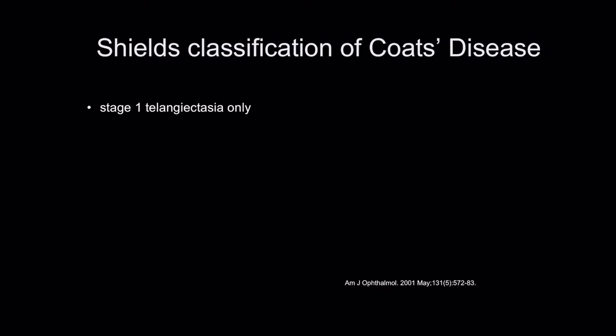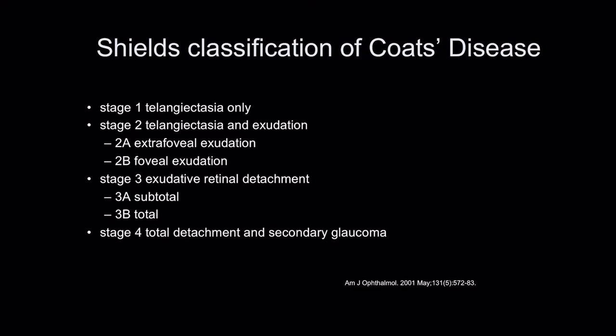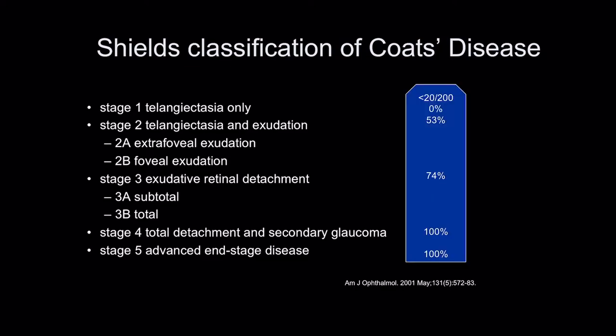Shields classified Coates disease: stage one is telangiectasia only; stage two has exudation — 2A being extra-foveal and 2B being foveal exudates; stage three is exudative retinal detachment — 3A subtotal and 3B total detachment; stage four is total detachment with glaucoma; and stage five is end-stage advanced disease. This correlates with vision, with good vision in stage one and very poor vision in stages four and five.